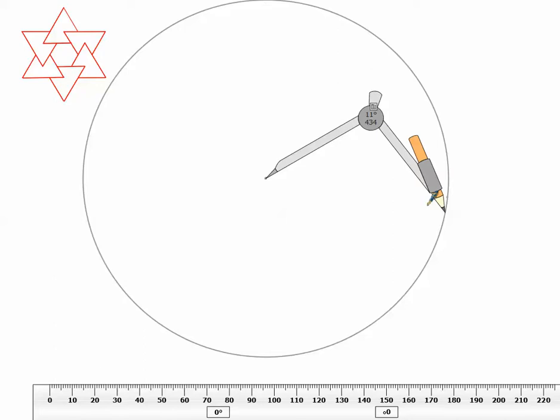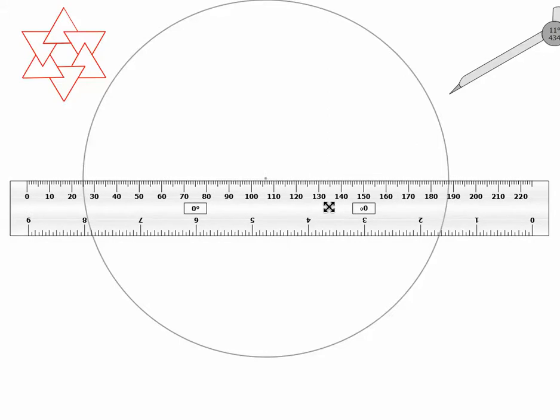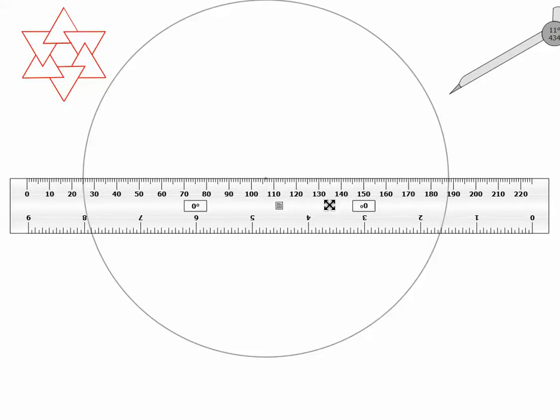Then after you draw your circle, you're going to remove your compass without allowing it to change its setting. And then you're going to draw a diameter.